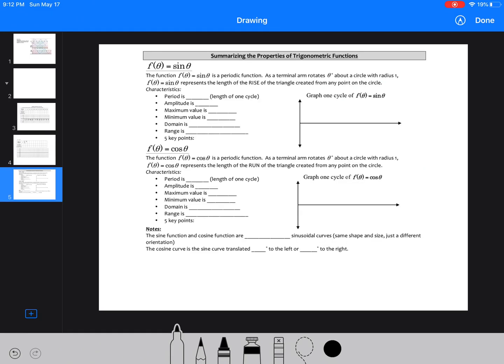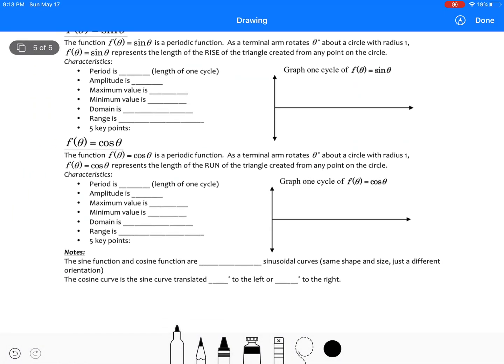So what we want to look at here is when we have a sine function, so the terminal arm rotates around with a radius of 1 represents the sine, so the triangle created. So the period of a sine function is 2 pi. The amplitude is 1, the maximum value is 1, the minimum is negative 1, the domain is from negative infinity to positive infinity. And that's because it goes on forever. It's a periodic function. It never stops. The range is from negative 1 to 1. And our five key points I put on that first slide.